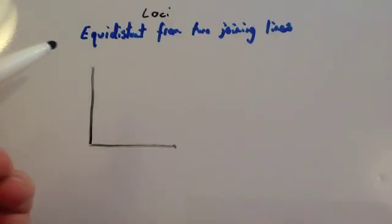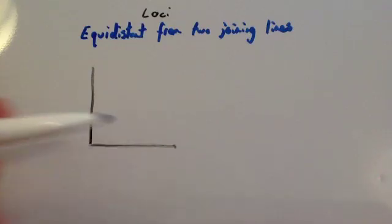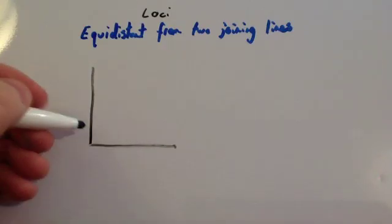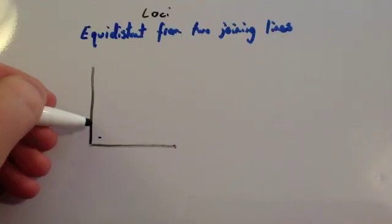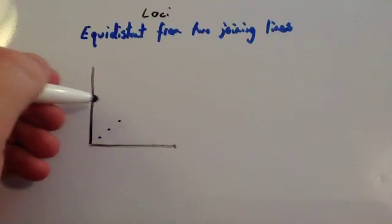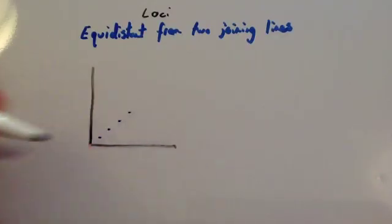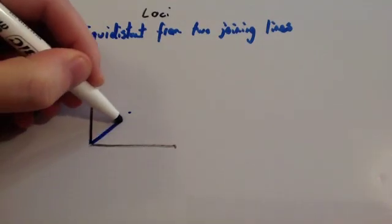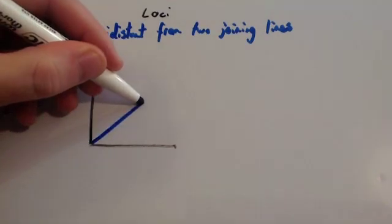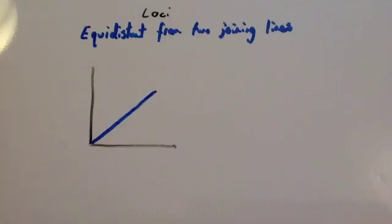Finally, if we consider the locus of points which are equidistant from two joining lines — or an angle — what you would get is the angle bisector. If it was equidistant from this line to this line, it would be in the middle. So you would use your compass and construct the angle bisector. Make sure you watch that video and the perpendicular bisector video before doing this lesson.